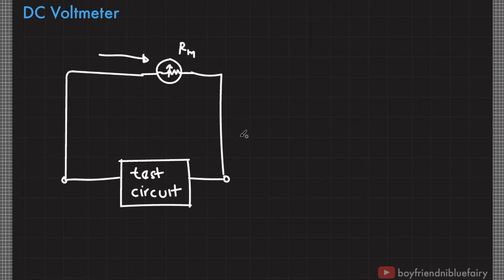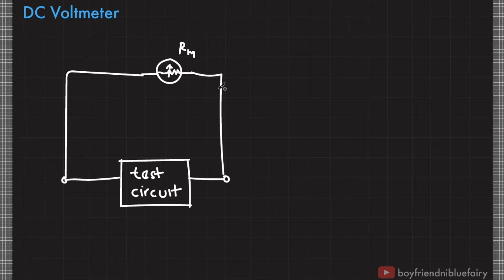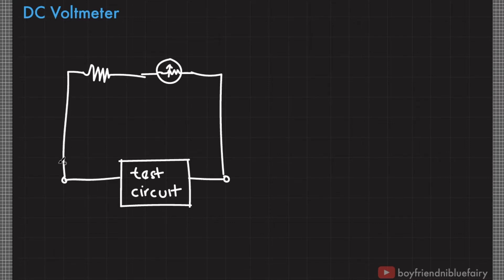In other words, an ideal voltmeter must not consume current to accurately measure the potential difference of our test circuit or test component. So we must find a way to increase the resistance of our galvanometer, and to do this we just attach a resistor here to add up some resistance. In voltmeter design, we call this the multiplier resistor.